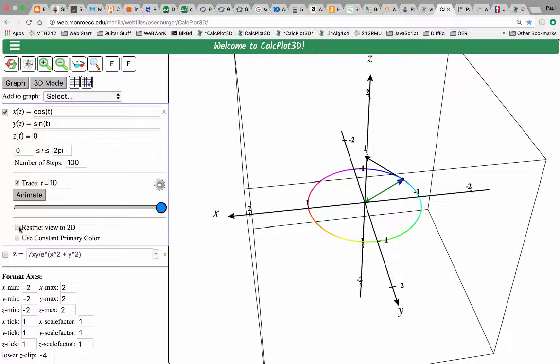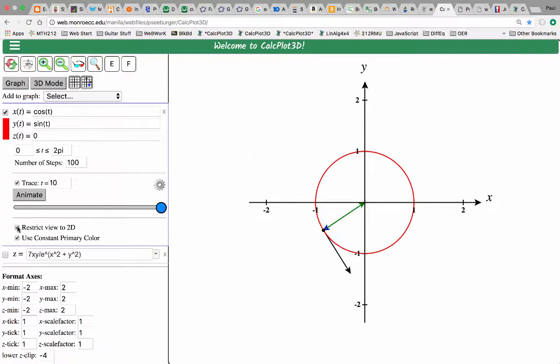And now to make it easier to see the 2D motion, I'm going to restrict the view to 2D with this checkbox. Now we can either use the scroll wheel, starting at zero and going to two pi, or we can animate the motion.